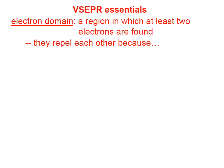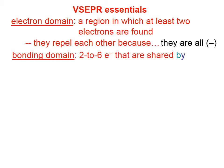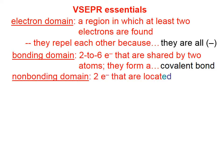An electron domain is a region in which at least two electrons are found. Electron domains tend to repel each other because they're all negatively charged. A clump of electrons will tend to repel another clump of electrons. A bonding domain is two to six electrons that are shared by two atoms. And they form a covalent bond. If two electrons are shared, that's a single bond. If four electrons are shared, that's a double bond. And if six electrons are shared, that's a triple bond.